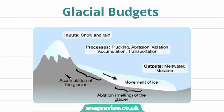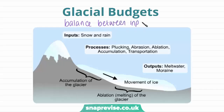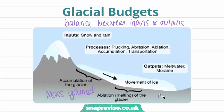Now that we have covered what is meant by accumulation and ablation, we are going to look at glacial budgets. The glacial budget is dependent on the balance between inputs and outputs, and this is dependent on the mass lost and mass gained by the glacier.